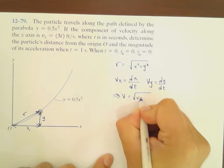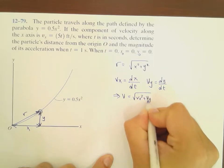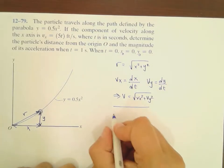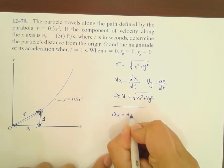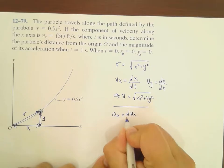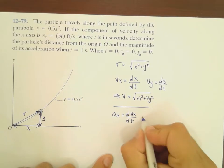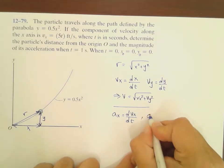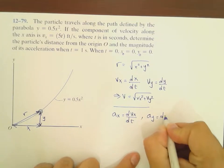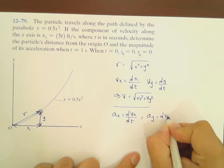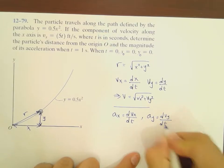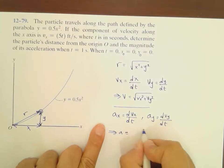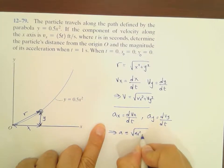The magnitude of the velocity is given by the square root of VX squared plus VY squared. Regarding acceleration, the X component of acceleration is the derivative of VX with respect to time, and the Y component of acceleration, aY, is the derivative of VY with respect to time. The magnitude of acceleration is then the square root of aX squared plus aY squared.